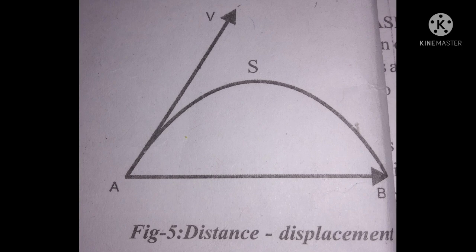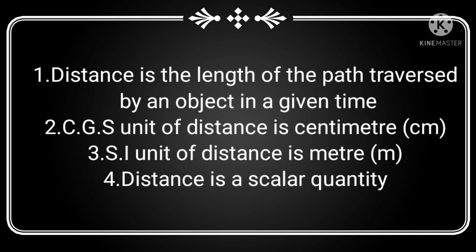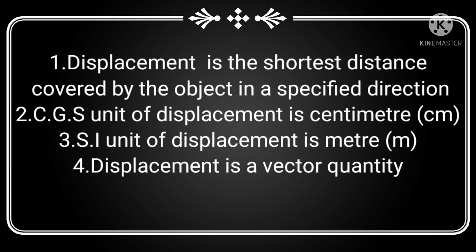The length of AB gives the displacement of the ball. Distance is the length of the path traversed by an object in a given time. The CGS unit of distance is centimeter and the SI unit is meter. Distance is a scalar quantity. Displacement is the shortest distance covered by the object in a specified direction. The CGS unit of displacement is centimeter, SI unit is meter. It is a vector quantity.